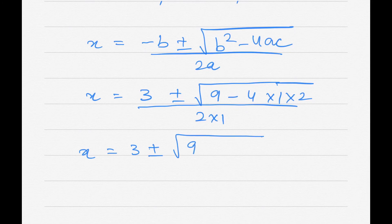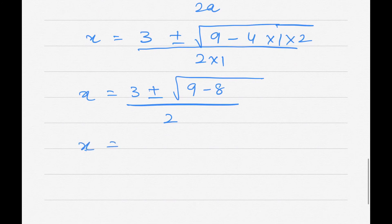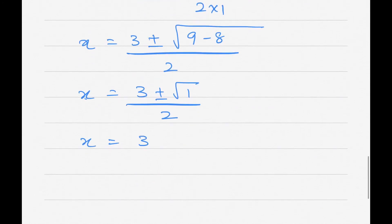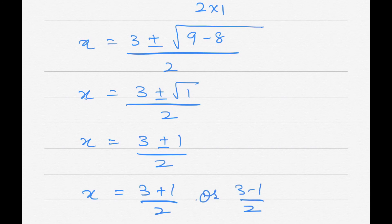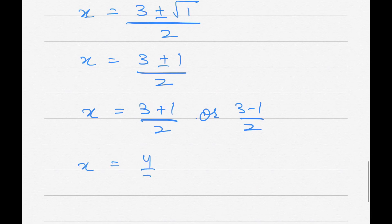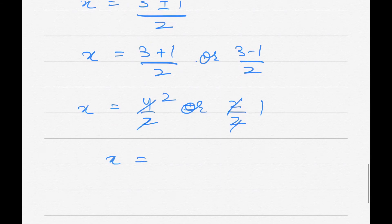So x = (3 ± √1) / 2 = (3 ± 1) / 2. This gives x = (3+1)/2 = 4/2 = 2, or x = (3-1)/2 = 2/2 = 1. So x = 2 or x = 1 are the two roots.